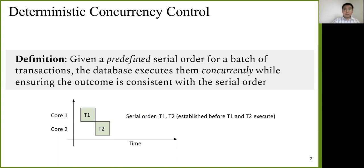Briefly, deterministic concurrency control is that given a predefined serial order for batch of transactions, the database executes them concurrently while ensuring the outcome is consistent with the serial order. For example, let's say we have two transactions, T1 and T2. They execute concurrently, but the database must ensure the serial order is T1 before T2. And this serial order is established before T1 and T2 execute, and this is why we call this deterministic.